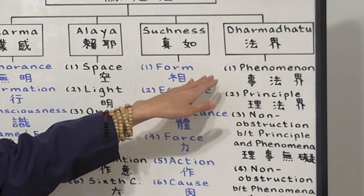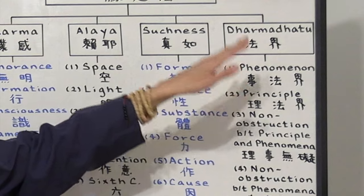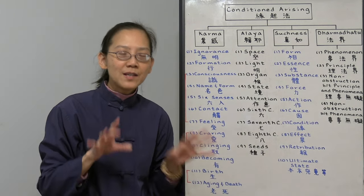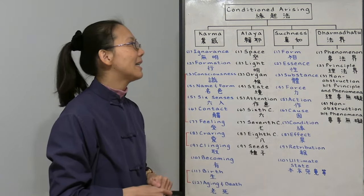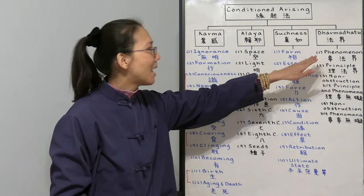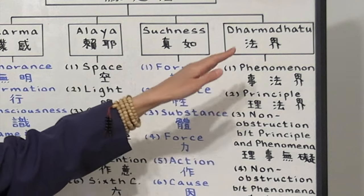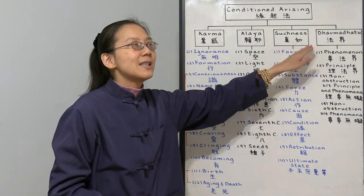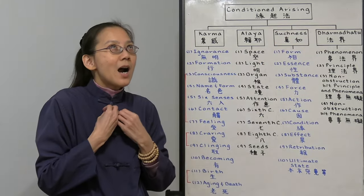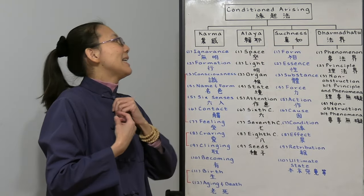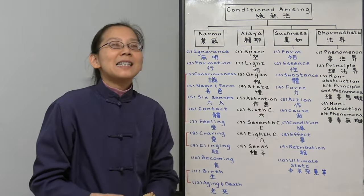The first one is the Dharma realm of phenomenon. What you see in the physical world, we call it the Dharma realm of phenomenon. Number two is the Dharma realm of the principle. What you do not see behind the physical existence. It's the heart, it's the mind, it's the principle.